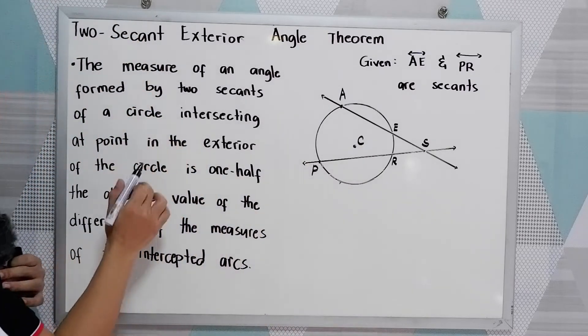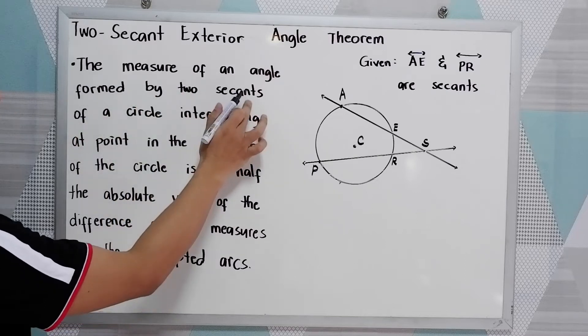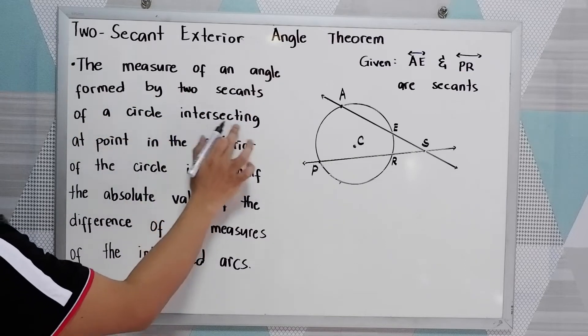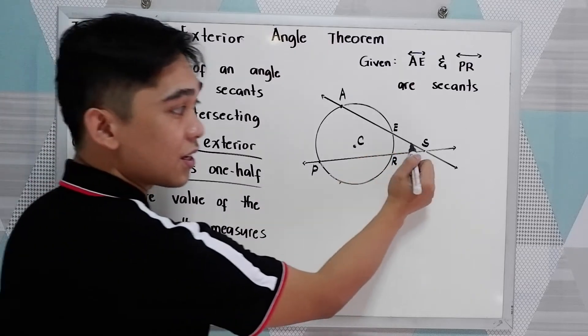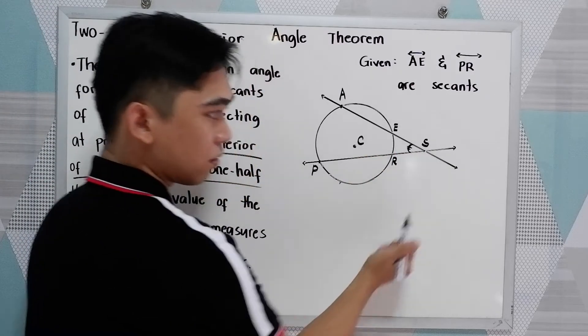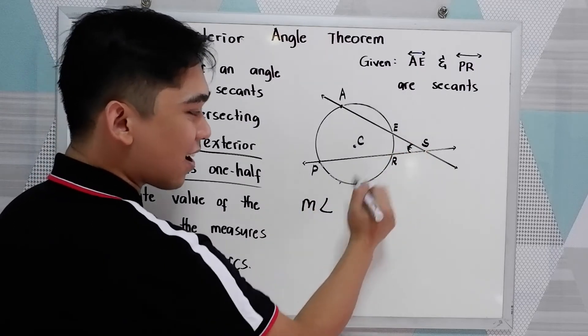In our theorem, the measure of an angle formed by two secants of a circle intersecting at a point in the exterior of the circle - so this angle, the measure of angle ESR